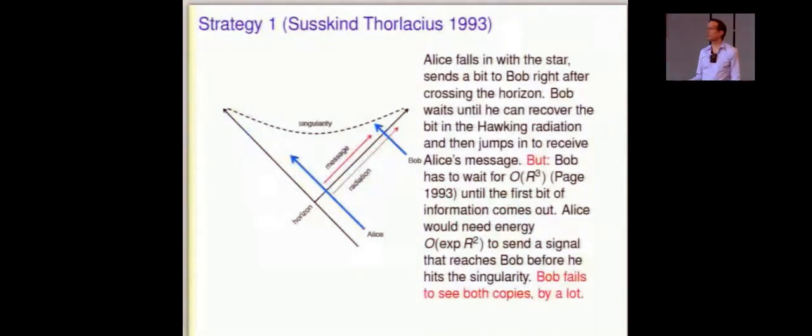The strategy that Suskind and Thorlacius came up with in 1993, in one of a sequence of early papers that established the notion of complementarity, you have an early observer who falls in with the star, carries a bit along with her, Alice, and as soon as she crosses the horizon, as fast as possible, that's the best case, she tries to send this bit over to Bob up along the horizon like this, inside the black hole, but as fast as possible, out to Bob. Now, if Bob stays outside forever, he'll never be able to see that bit. But what Bob wants to do, he wants to stay outside long enough to see the Hawking radiation copy of that bit. And then quickly jump in and receive Alice's second copy and verify that this horrible thing, quantum Xerox thing, has taken place.